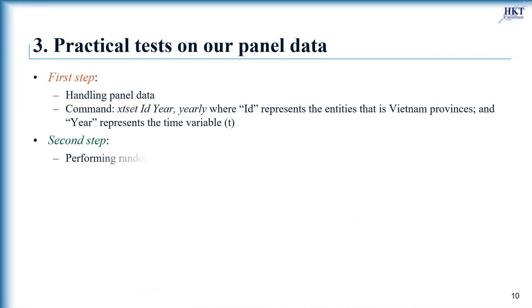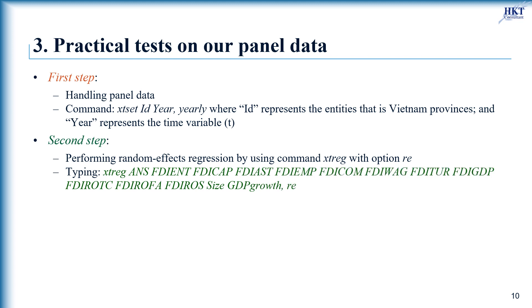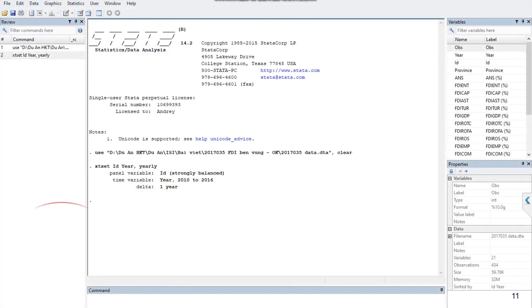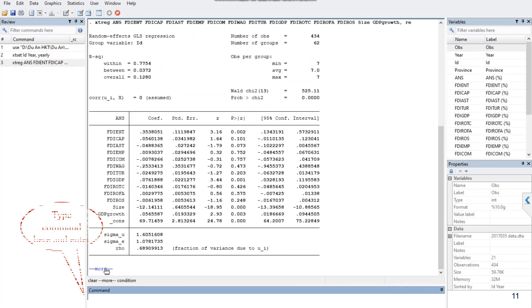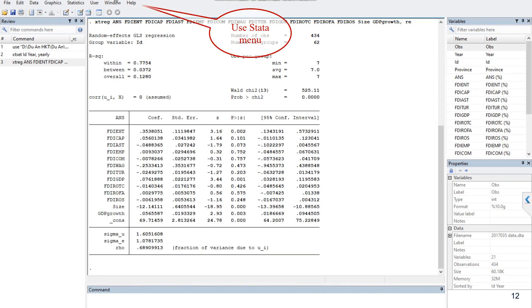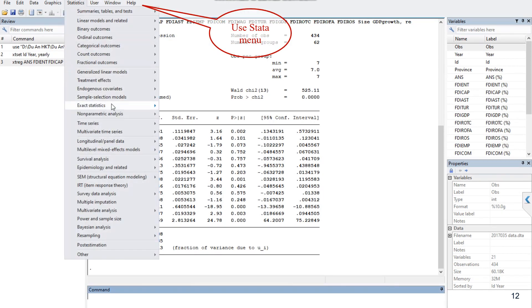As the panel data has been handled, we can now run the random effects model by using the Stata command xtreg with dependent variable ans and 13 variables, including 11 independent ones and 2 control variables in our panel data. Type the command here and enter. Or you can click this command on the Stata menu by avoiding typing errors.